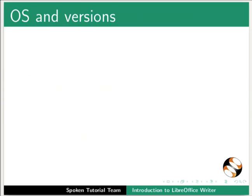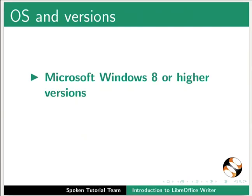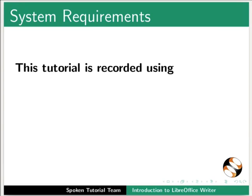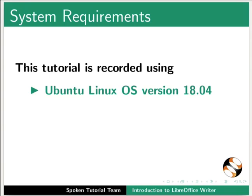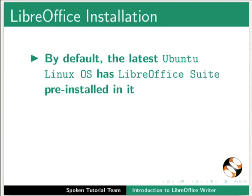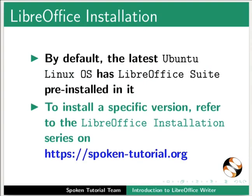LibreOffice Writer can run on any of the following operating systems: Microsoft Windows 8 or higher versions, GNU Linux OS, and Mac OS X. This tutorial is recorded using Ubuntu Linux OS version 18.04 and LibreOffice Suite version 6.3.5. By default, the latest Ubuntu Linux OS has LibreOffice Suite pre-installed. To install a specific version, refer to the LibreOffice installation series on this website.